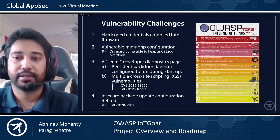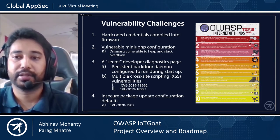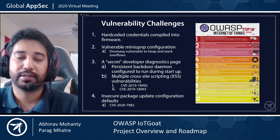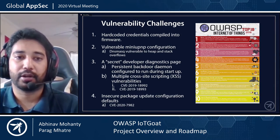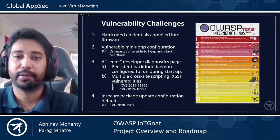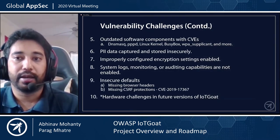It also has insecure network services including a vulnerable UPnP connection and a vulnerable, downgraded DNS Masq that contains heap and stack overflow vulnerabilities. IoT Goat also contains a secret developer diagnostics page that can be used to obtain useful information about the router for use in exploits. It contains a persistent backdoor daemon configured to run each time the router restarts, and also multiple cross-site scripting vulnerabilities that can be exploited to hijack the entire browser.